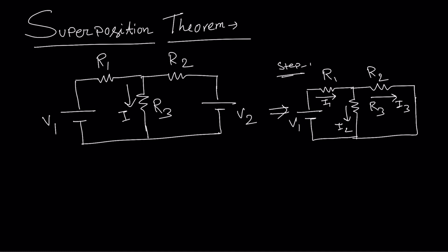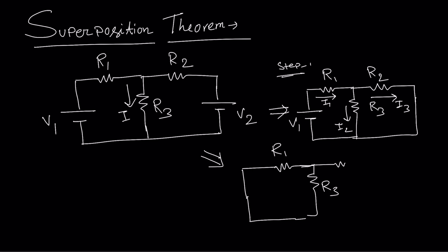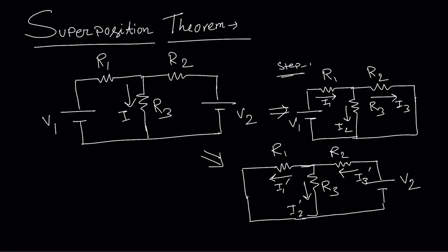Now we need to consider voltage source V2. We draw another circuit with only voltage source V2, replacing voltage source V1 by its internal resistance — that means a short circuit. With R1, R3, and R2, we connect voltage source V2. For this source, we consider currents I3 dash, I1 dash, and I2 dash flowing through the respective branches. The superposition theorem states that the current across any element can be determined by considering the individual contributors.